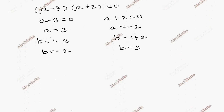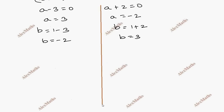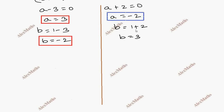We have two equations. Using the intercept formula x by a plus y by b equal to 1, we substitute each pair of a and b values: first using a equal to minus 2 and b equal to 3, then using a equal to 3 and b equal to minus 2.